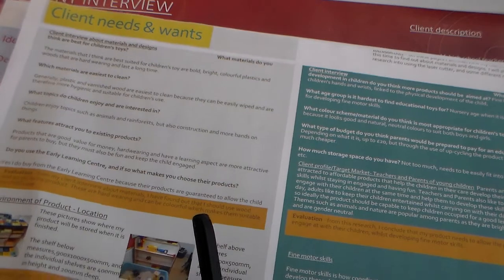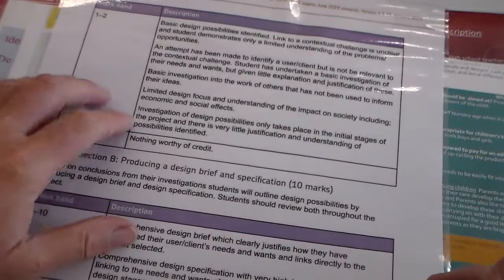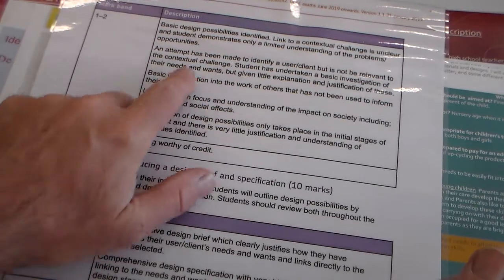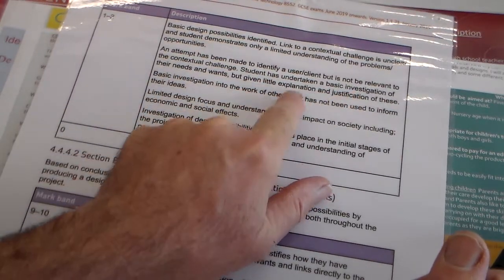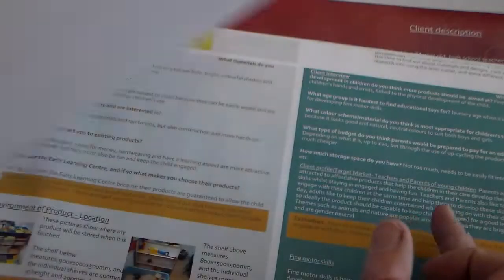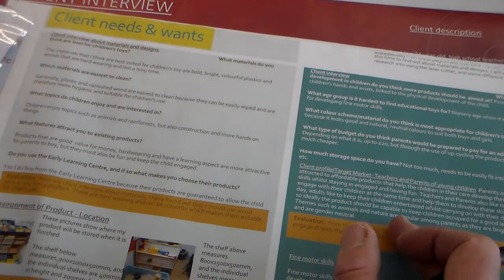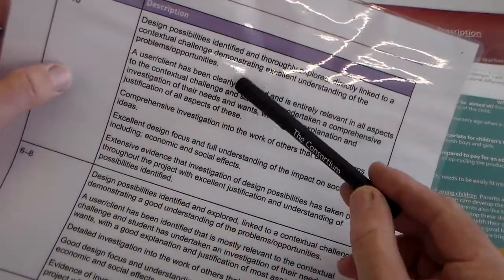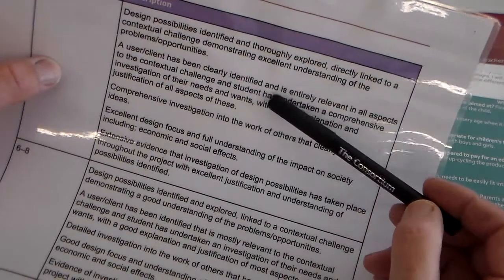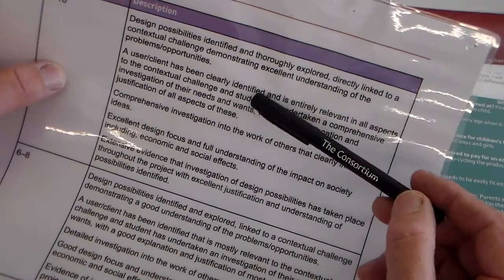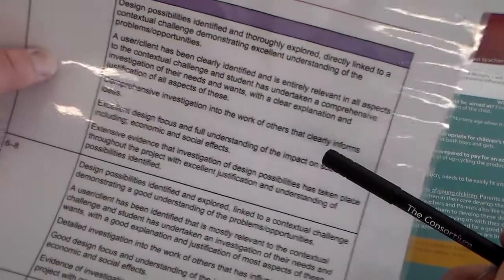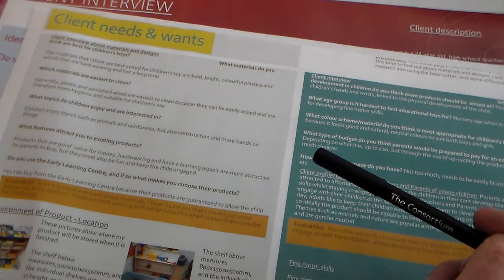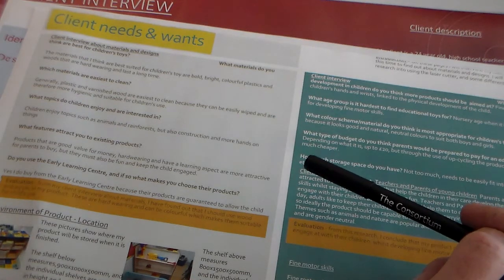The mark scheme here is very clear. In the one mark band it says an attempt has been made to identify a user or client but not relevant to the contextual challenge. The student has undertaken basic investigation of their needs and wants but given little explanation and justification. In the highest band, a user or client has been clearly identified and is entirely relevant in all aspects to the contextual challenge. The student has undertaken a comprehensive investigation of their needs and wants with a clear explanation and justification.